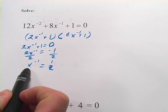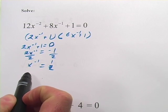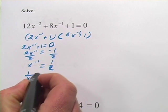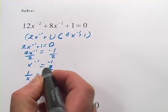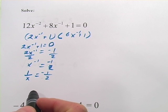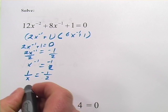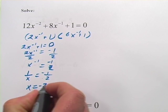Now we need just to think about what is x to the negative 1. Well, that's the same as 1 over x. So I've got 1 over x equals negative 1 half, and if I want to cross-multiply here and solve, I can solve for x equals negative 2.